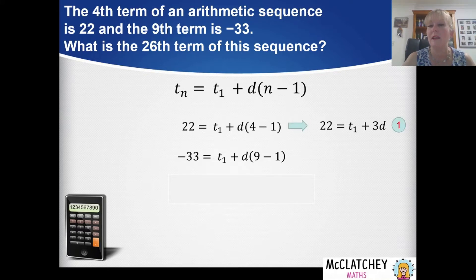We've got some information in brackets. Let's take that 4 minus 1 and make that 3 and multiply it by the d. We've now got 3d and we're going to call that equation 1. We'll do the same on the bottom as well. We've got 9 take away 1 becomes 8d and we're going to call that equation 2.